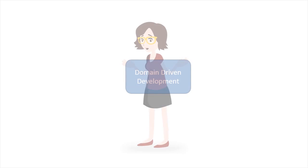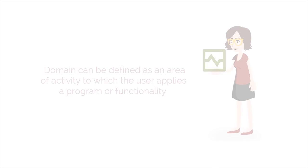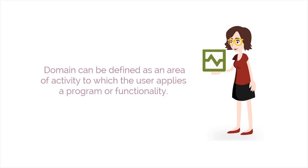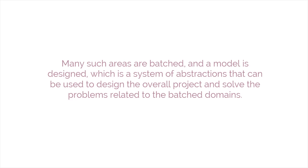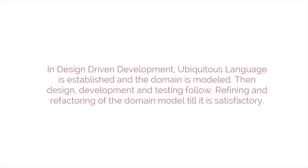The last Agile method we will discuss is Domain-Driven Design. DDD is an Agile development approach meant for handling complex designs along with evolving the overall project system. A domain is defined as an area of activity to which the user applies a program or functionality. Many such areas are batched and a model is designed — a system of abstractions used to design the overall project and solve problems related to the batched domains. The core values of DDD include domain-oriented, model-driven design, ubiquitous language, and bounded context. In domain-driven development, ubiquitous language is established and the domain is modeled, followed by design, development, and testing, and then refining and refactoring of the domain model until it is satisfactory.